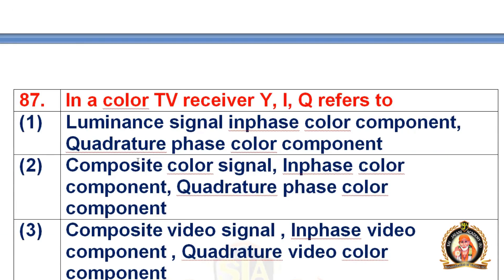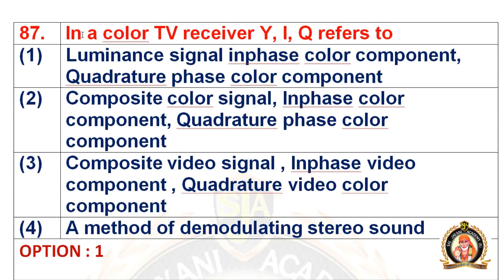Move on to the 87th question: in a color TV receiver, why YIQ refers to dash. The first option is luminance signal, in-phase color component, quadrature phase color component. The second is composite color signal, in-phase color component, quadrature phase color component. The right option is the first one — luminance signal, in-phase color component, quadrature phase color component.